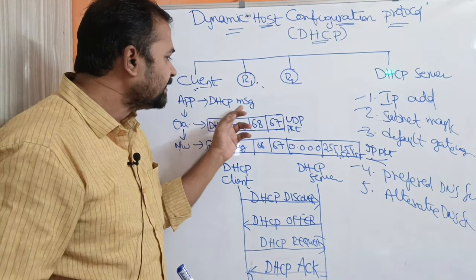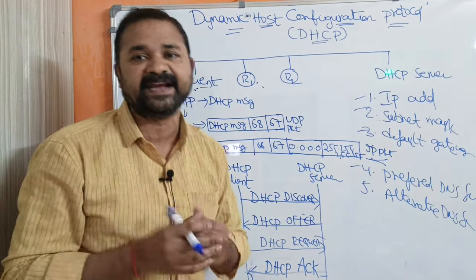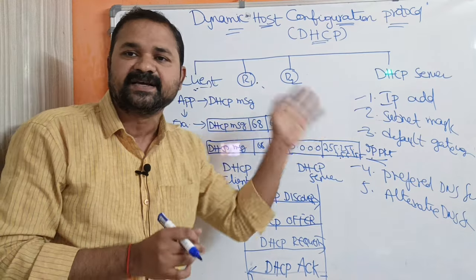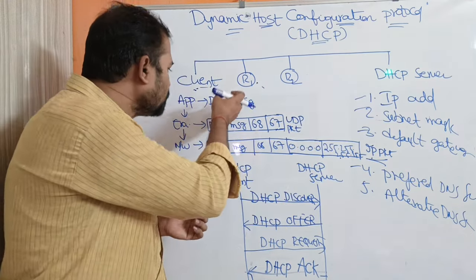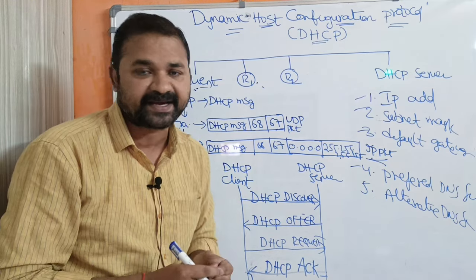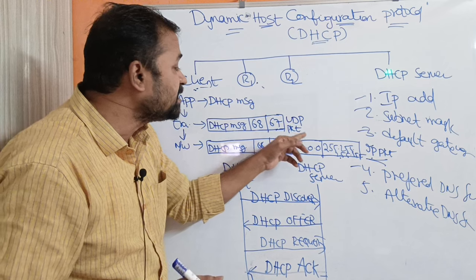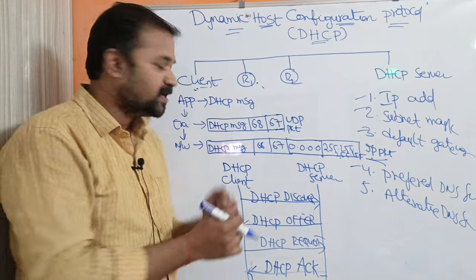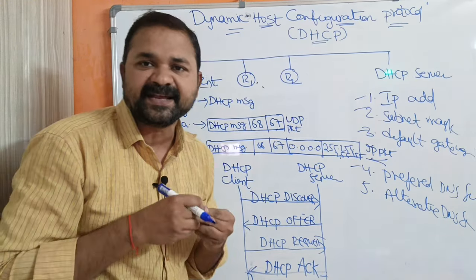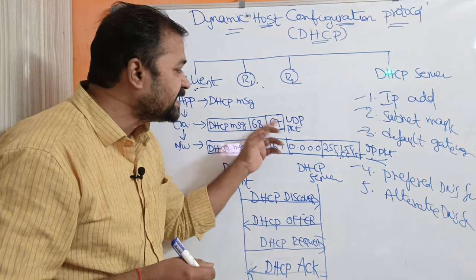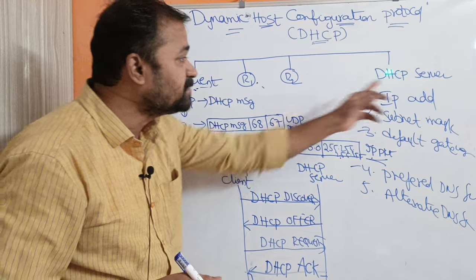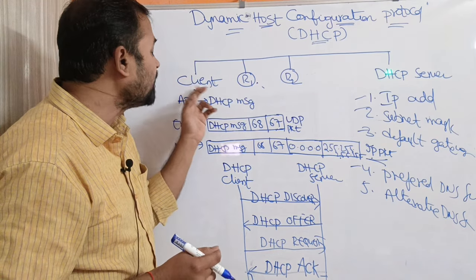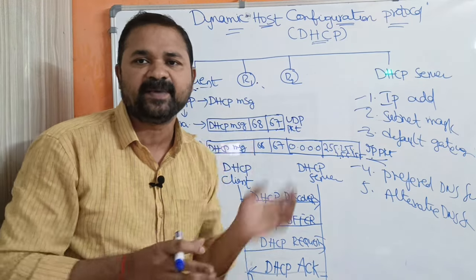At the application layer, a DHCP request message will be generated when a computer wants an IP address. That message is transmitted to the transport layer, where it is encapsulated in a UDP packet. The UDP packet contains the DHCP request message and port numbers 68 and 67 — where 67 is the port number of the DHCP server and 68 is the port number of the client machine.